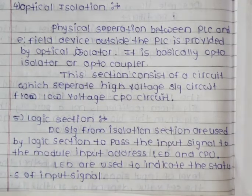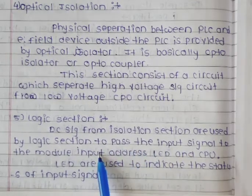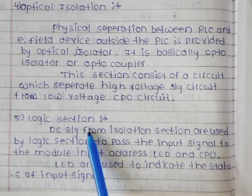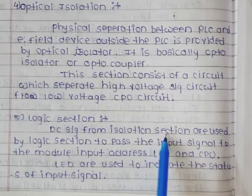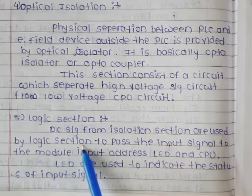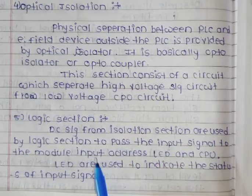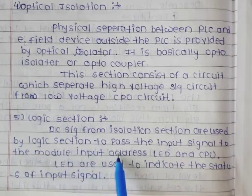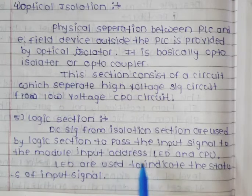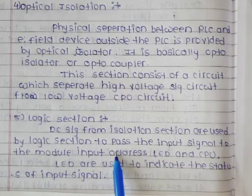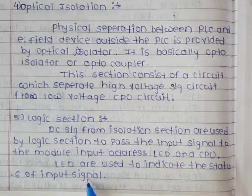In the logic section, the DC signal from the isolation section is used by the logic section to pass the input signal to the module input address, LED, and CPU. The isolation section supplies the DC signal, which the logic section uses to pass the input signal to the module input address. The LED is used to indicate the status of the input signal.